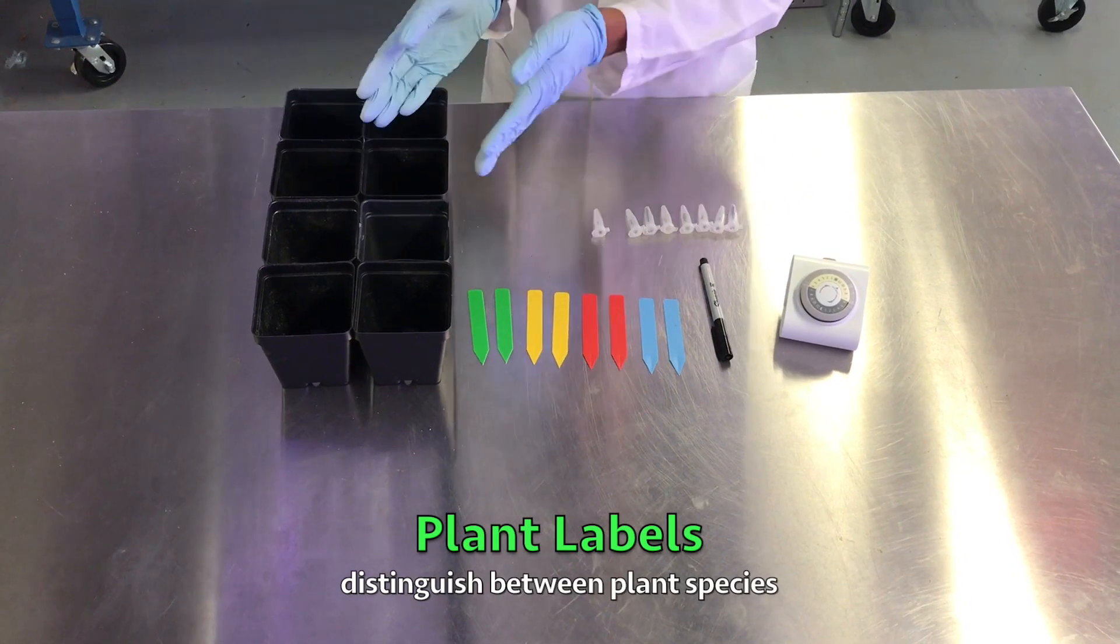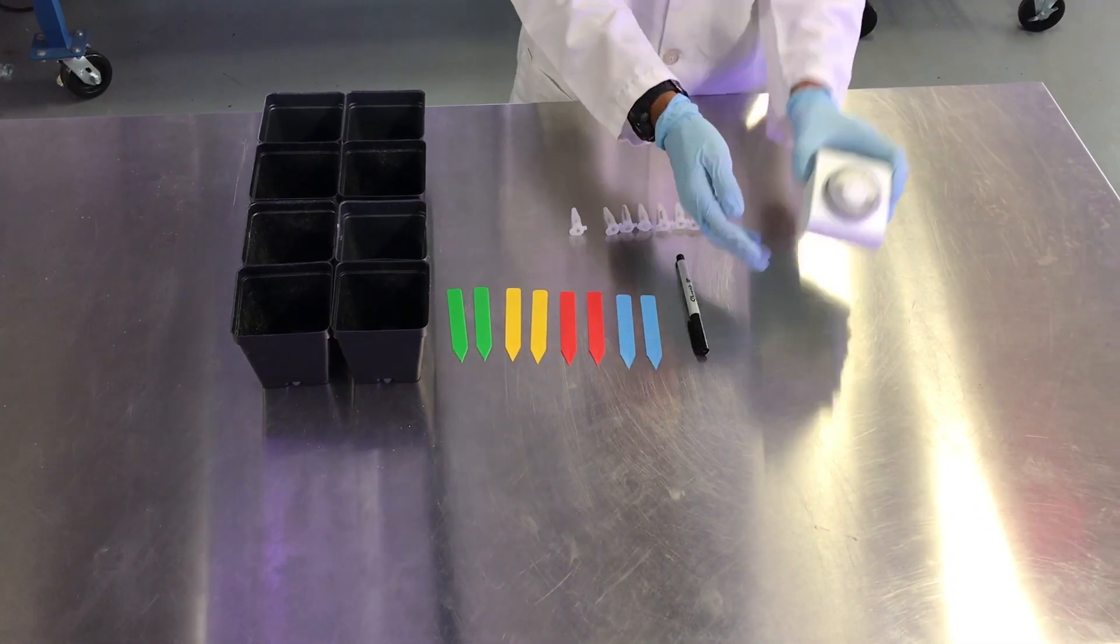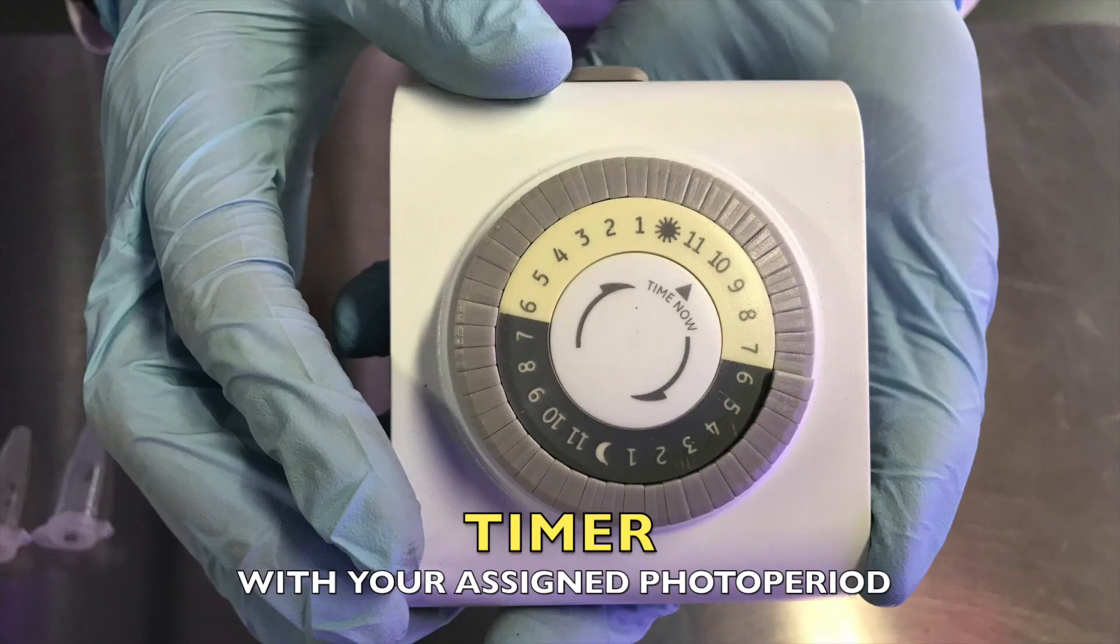Plant labels, two of each color to distinguish the plant species, and a timer set to be on with your assigned photoperiod.